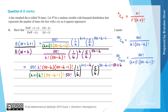Now we simplify: 50 factorial cancels top and bottom; K factorial cancels; and (50 minus K minus 1) factorial cancels. Looking at the powers, K and negative K cancel, 50 and negative 50 cancel, and minus K and positive K cancel. We're left with (50 minus K) on the top line and (K plus 1) on the bottom, multiplied by (1/6) to the power of 1, times (5/6) to the power of negative 1.